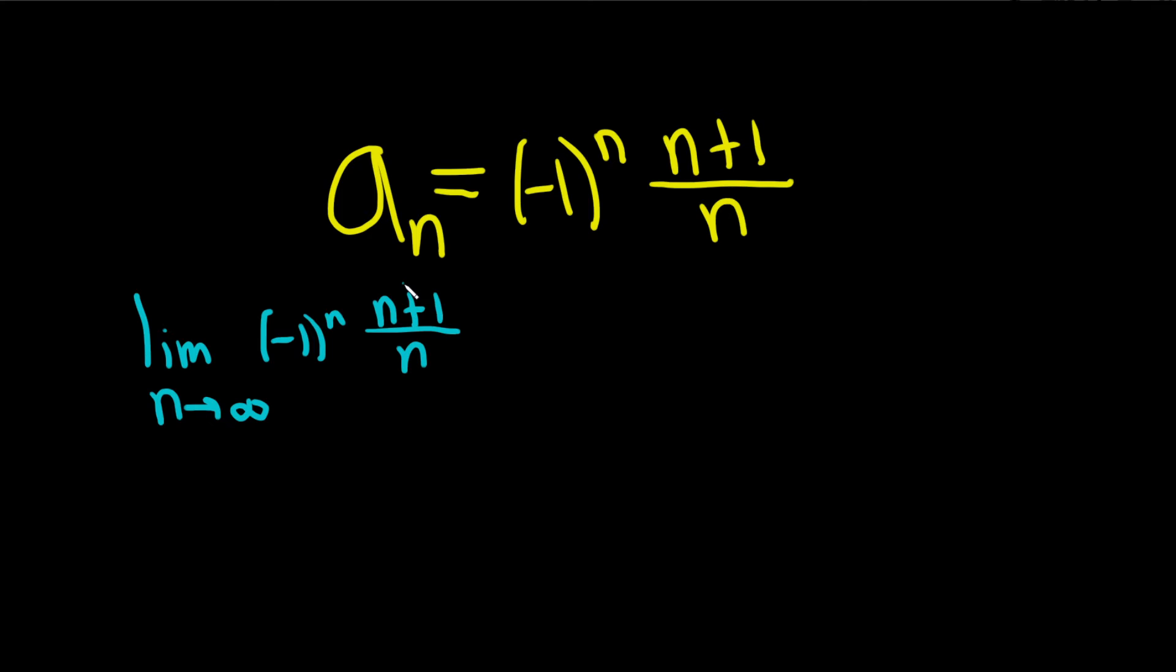So in this case here, this piece here is going to approach 1. And you can tell because the growth rates are the same, right? This is n to the first power, n to the first power.